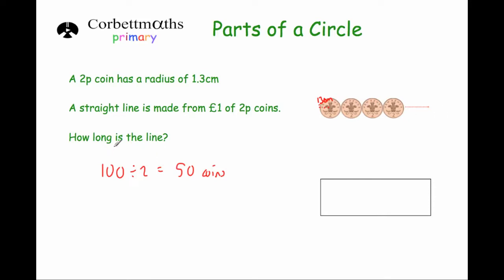And the question says, how long is the line? So if we can work out how wide one of the coins is, if we times that by 50, we'll find the length of the whole line. Now, how wide a coin is, is the number name for the diameter of it, the distance across it.